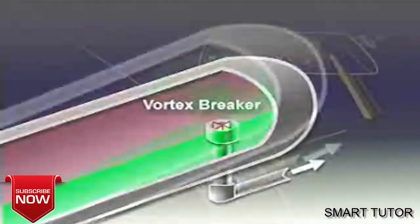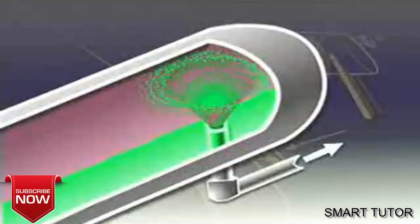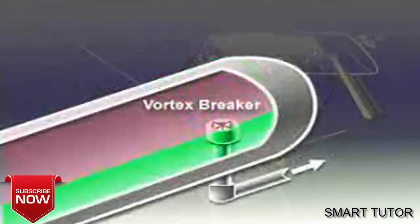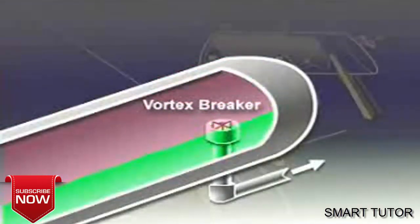A vortex breaker keeps vortexes from developing when the liquid control valve is open, thus preventing gas from being drawn out of the vapor space and re-entrained in the liquid outlet.